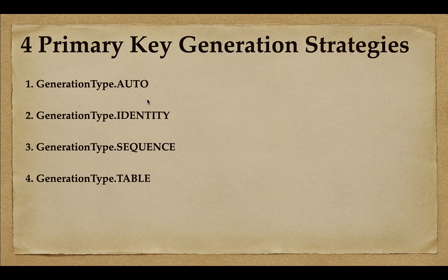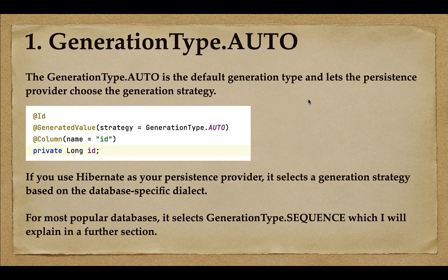Let's first look at GenerationType.AUTO. GenerationType.AUTO is the default generation type and it lets the persistence provider choose the generation strategy. Whenever we specify GenerationType.AUTO, this value lets the persistence provider or the database vendor choose the generation strategy. To specify it, we use the @GeneratedValue annotation.